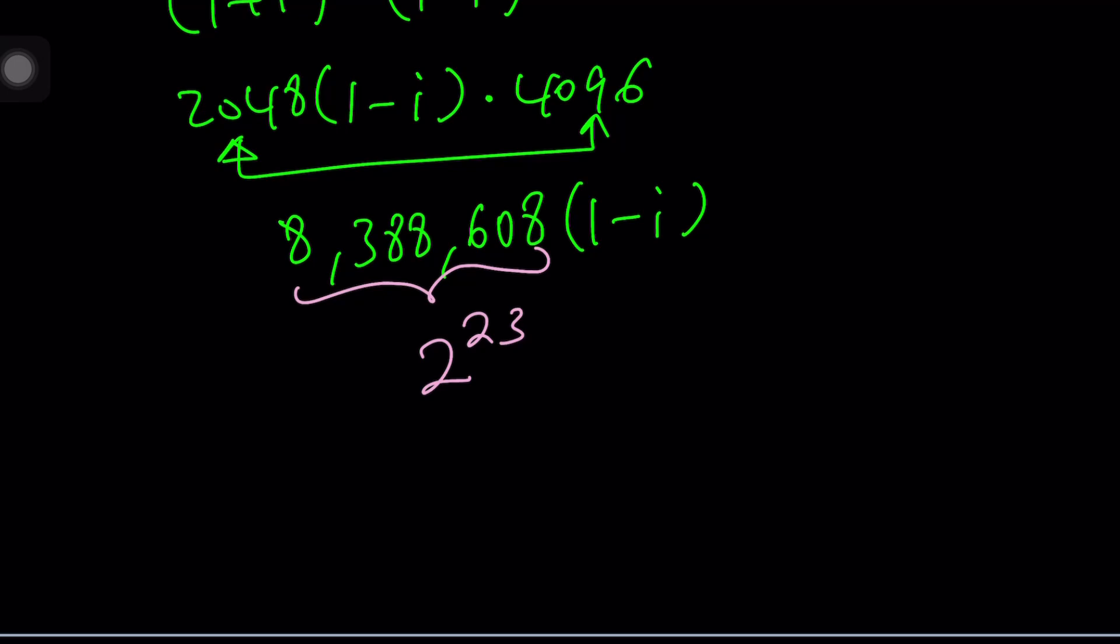Because remember, the first method was the binomial theorem. You're probably not going to use it. And then second is just this one. Let's talk about the third.